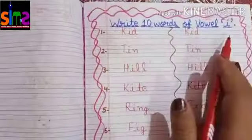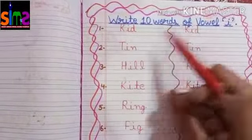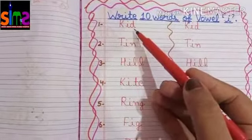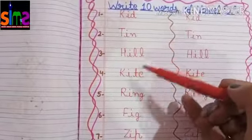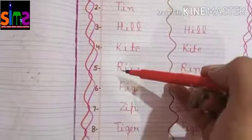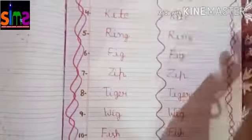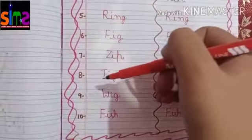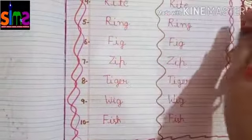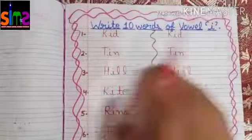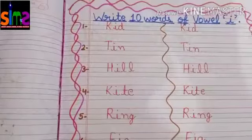So kids, once again we will revise the 10 words of vowel I. K-I-D, KID. T-I-N, TIN. H-I-L-L, HILL. K-I-T-E, KITE. R-I-N-G, RING. F-I-G, FIG. Z-I-P, ZIP. T-I-G-E-R, TIGER. W-I-G, WIG. F-I-S-H, FISH. Kids, like this you all will do this worksheet of 10 words of vowel I in your English copy.